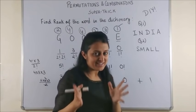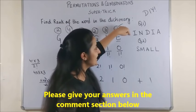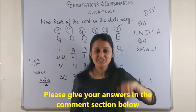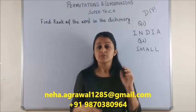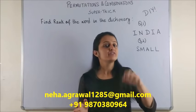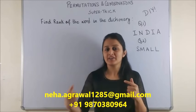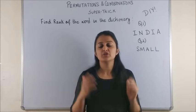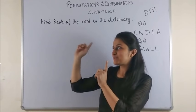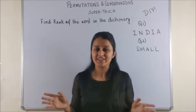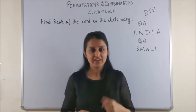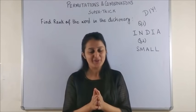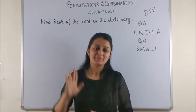Now time for your DIY. The questions are find the rank of the alphabets INDIA and SMALL in the dictionary when all the alphabets are arranged. I hope you enjoyed learning about finding the rank when the digits are repeating. If yes, then make sure to like this video, share this video and don't forget to subscribe to my channel. It's free. See you with the next one very soon. But make sure you practice this one. It is very important for your competitive exams. Bye-bye.